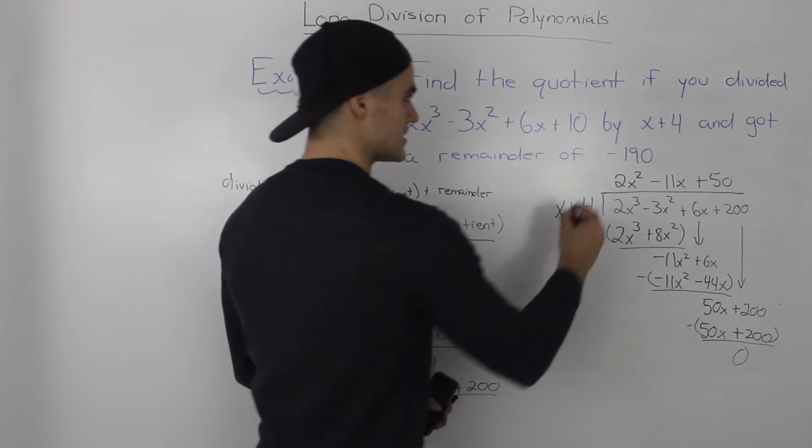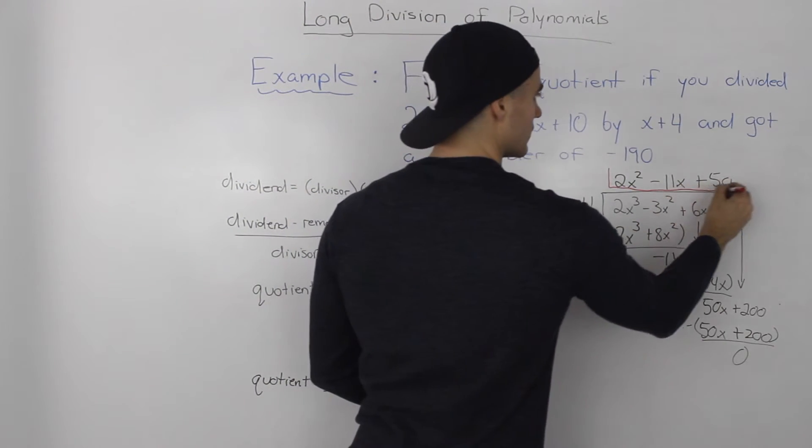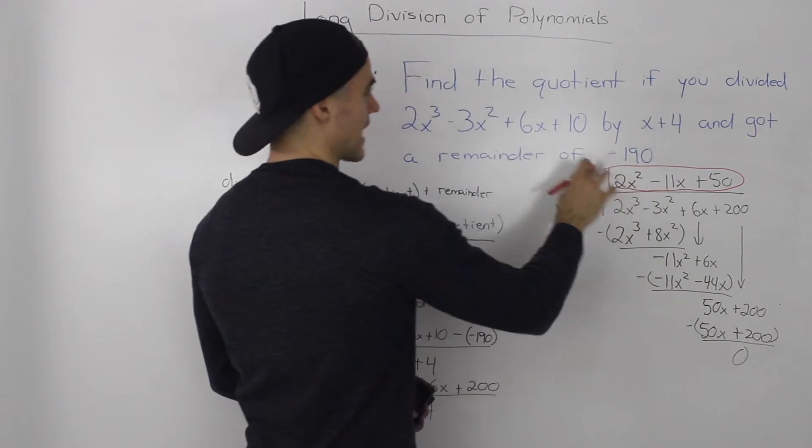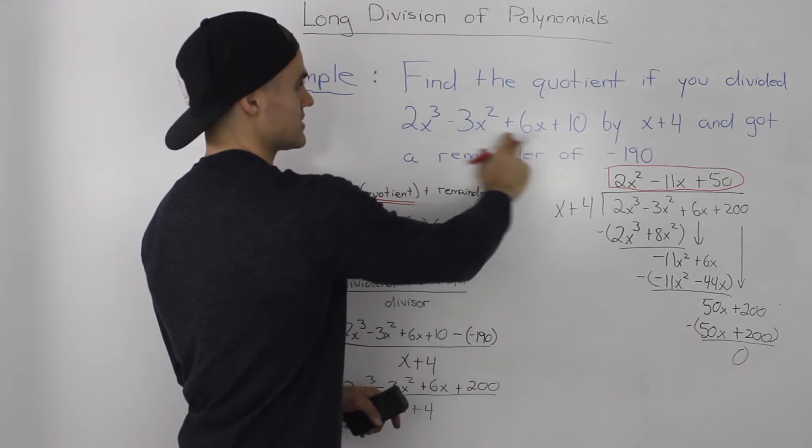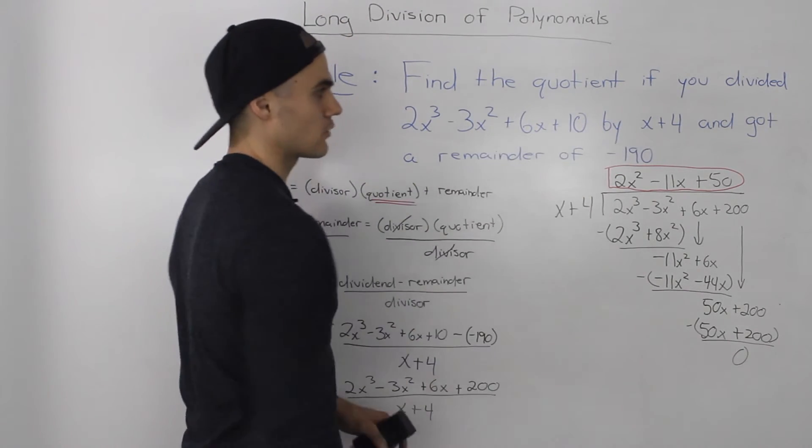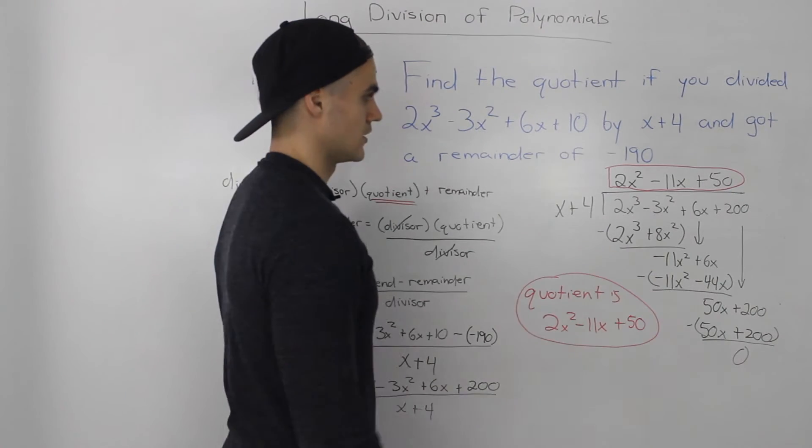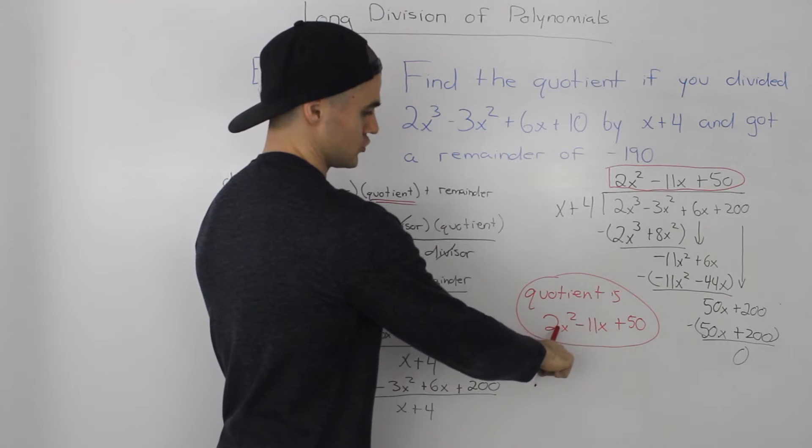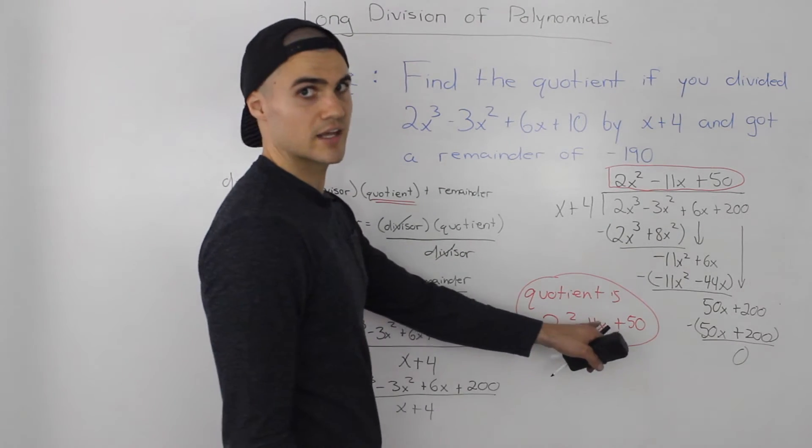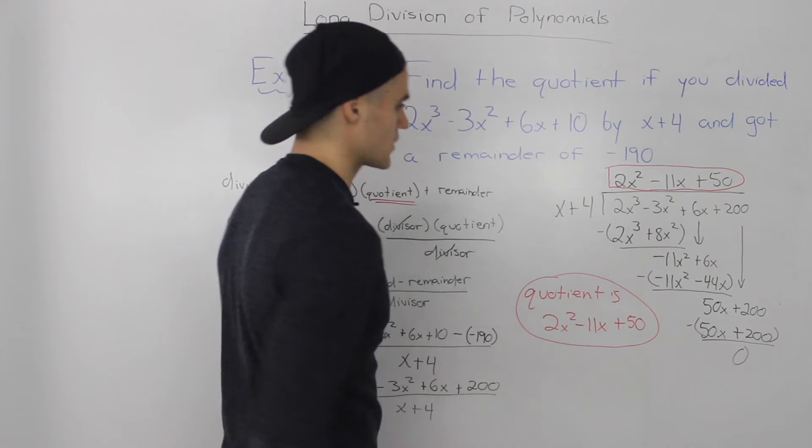This quotient that we got is our answer. Find the quotient for when you divide this polynomial by x plus 4 and get a remainder of negative 190. So basically our quotient is 2x squared minus 11x plus 50 for this question that we got.